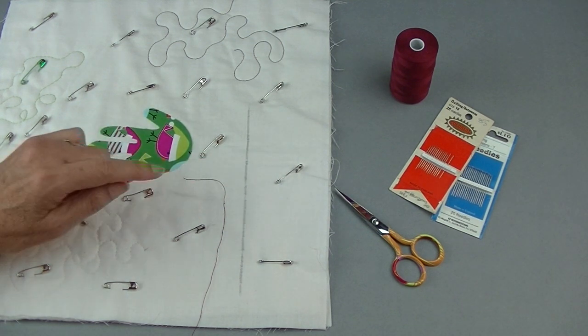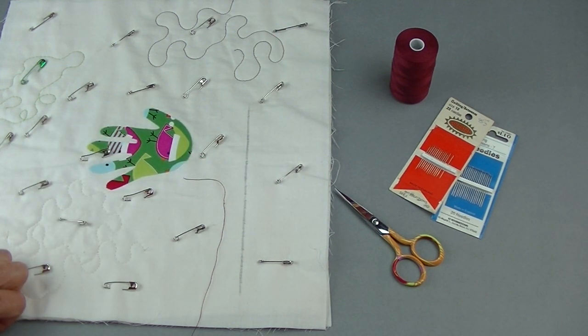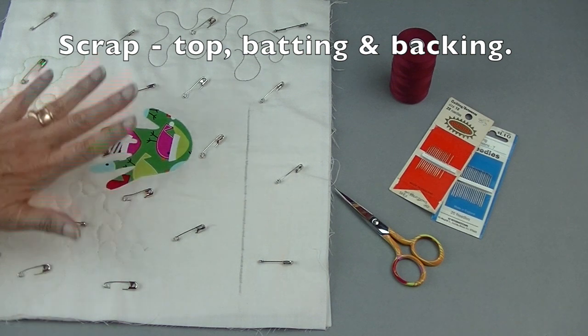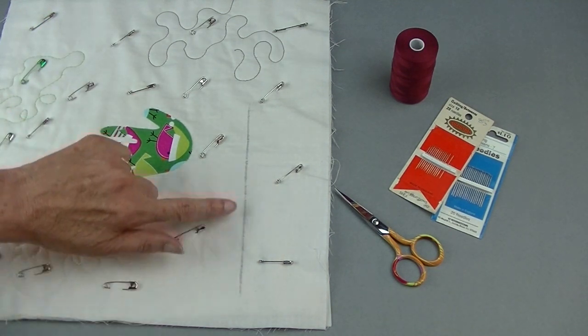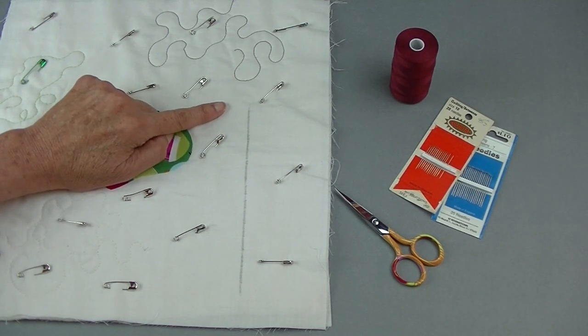Now that you know how to tie the knot, let me show you how to hide it. I'll be using this scrap where I kind of test out stitching or iron-ons. I've drawn a line here that I'm going to follow.